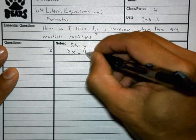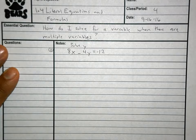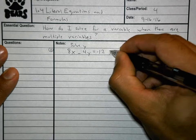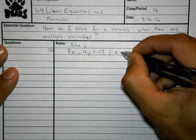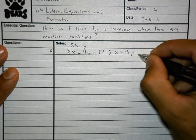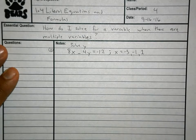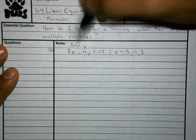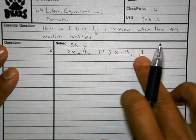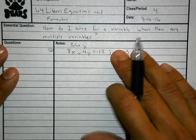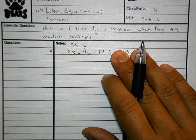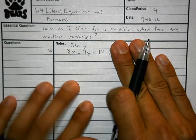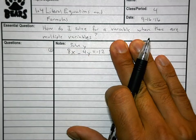8x minus 4y equals negative 12. And then it's going to have a semicolon, and it's going to have x equals negative 3, negative 1, comma 1. It looks really complicated, but the directions are right here: solve for y. We're going to kind of ignore this other information until we do the very first thing, which is solving for y — getting the y by itself.